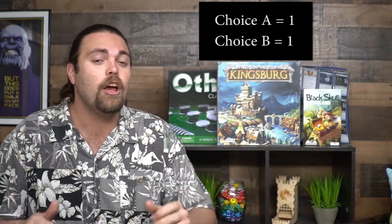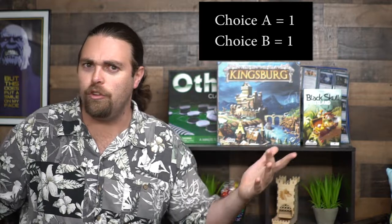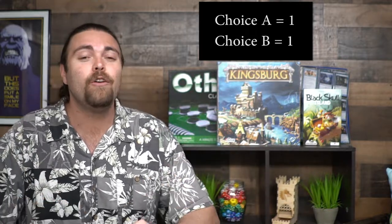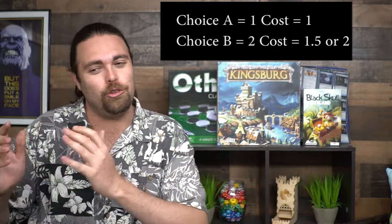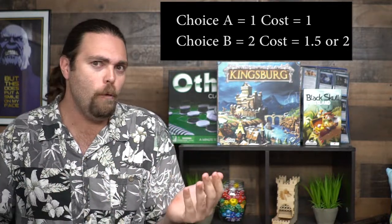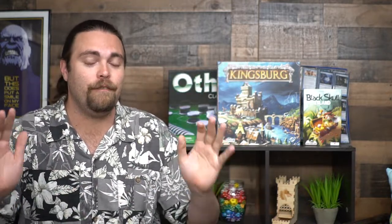When we talk about balance, let's talk about choice. Example one: Choice A equals 1 and Choice B equals 1. They're different choices but valued the same. Another option: Choice A equals 1 and costs 1, whereas Choice B equals 2 but costs 1.5 or 2. In general, the higher the cost of something in a board game, the more value you're going to get out of it. Usually the cost is going to be slightly less than the value of something.